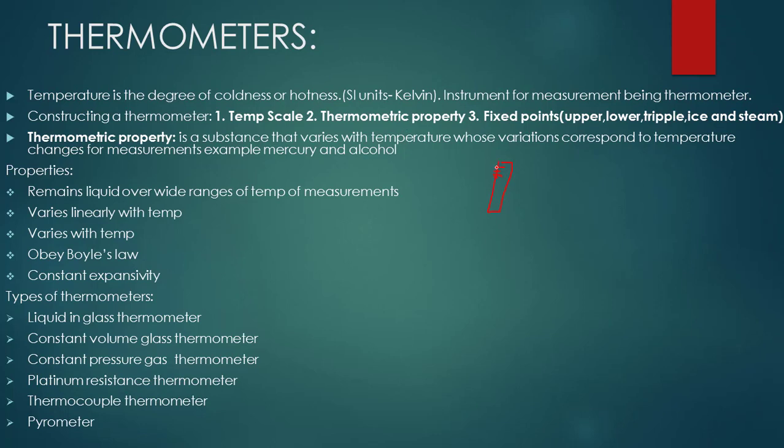The thermometric property is a substance that varies with temperature, whose variations correspond to temperature changes for measurement. For example, if we take mercury or alcohol and heat it at different temperatures, it will either expand or contract.